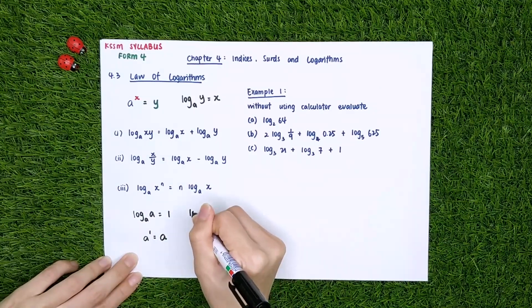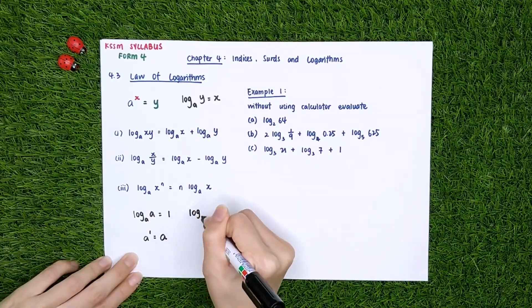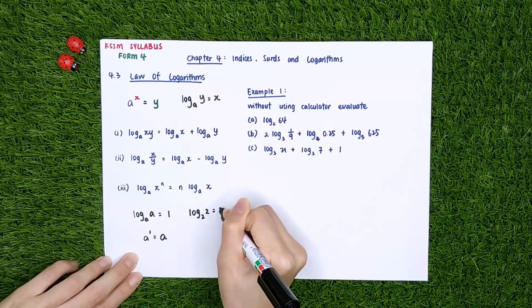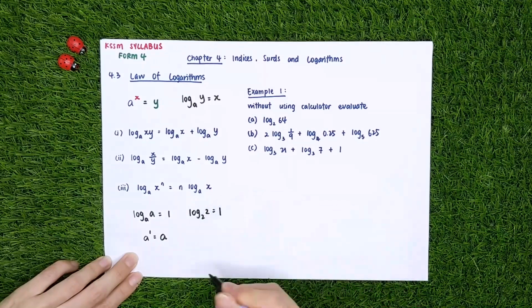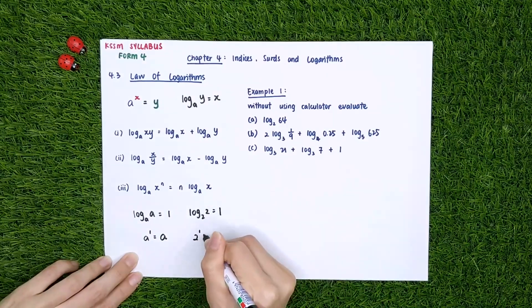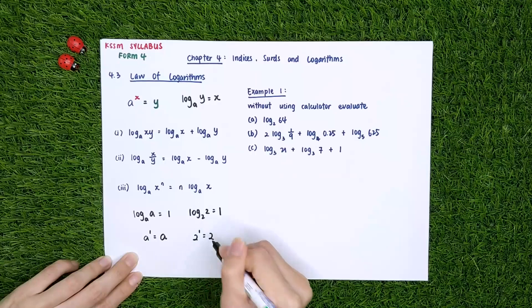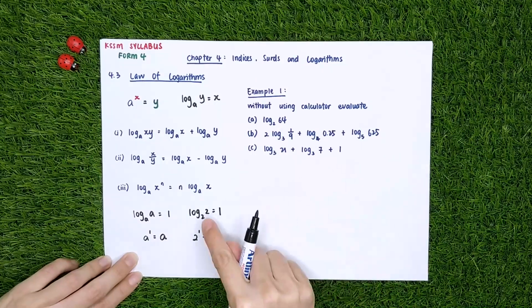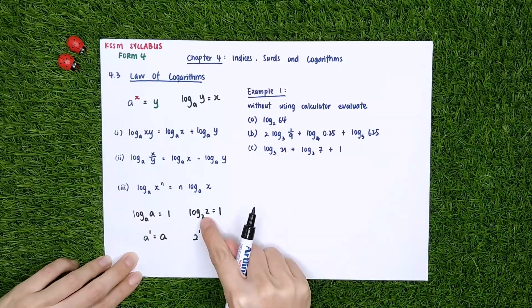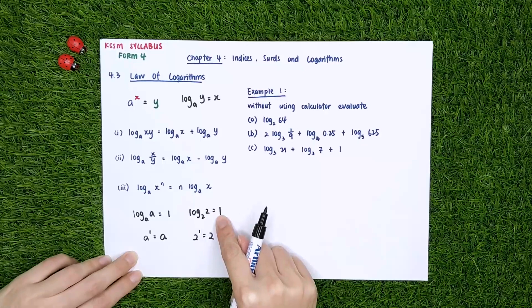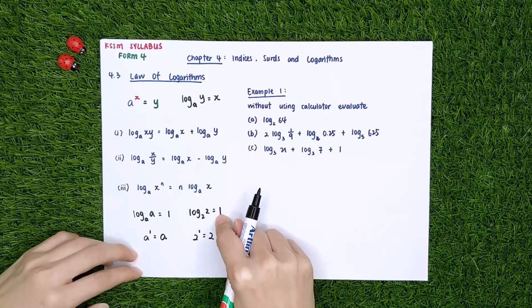For example, log_2(2) equals 1, because 2 power of 1 equals 2. So if the number in the argument and the base are the same, then it equals 1.